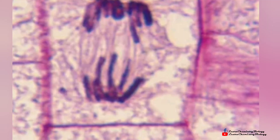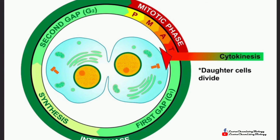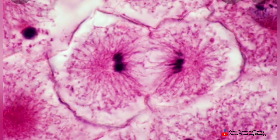The last step is cytokinesis. In cytokinesis, the cytoplasm of the cell divides into two daughter cells, and hence the mitosis cell division is complete.